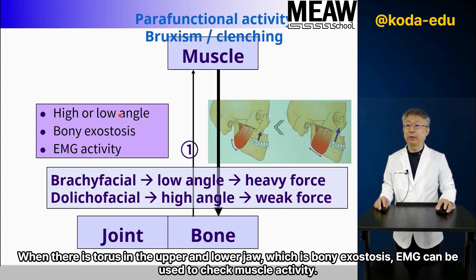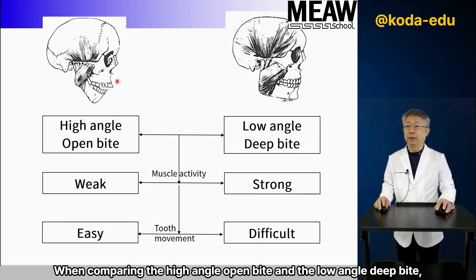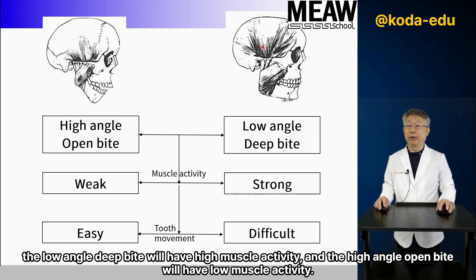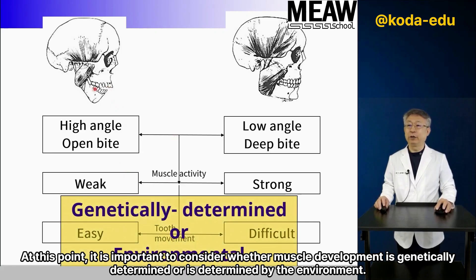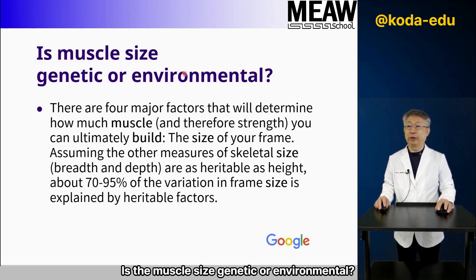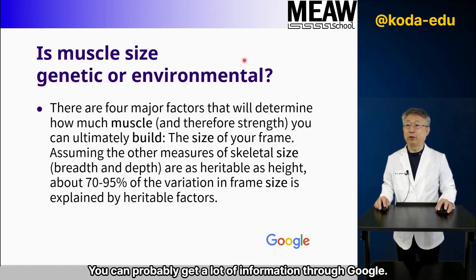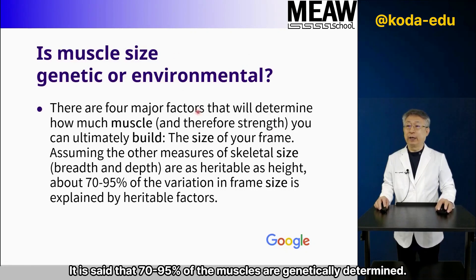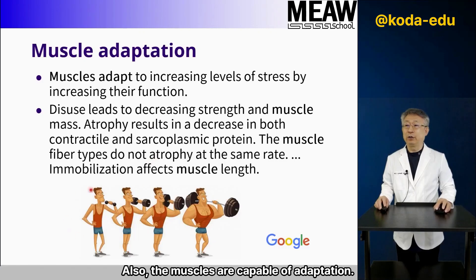When there is torus in the upper and lower jaw — bony exostosis — EMG can be used to check muscle activity. When comparing the high-angle open bite and the low-angle deep bite, the low-angle deep bite will have high muscle activity, and the high-angle open bite will have low muscle activity. At this point, it is important to consider whether muscle development is genetically determined or determined by the environment. It is said that approximately 70–95% of muscle size is genetically determined, and muscles are also capable of adaptation.